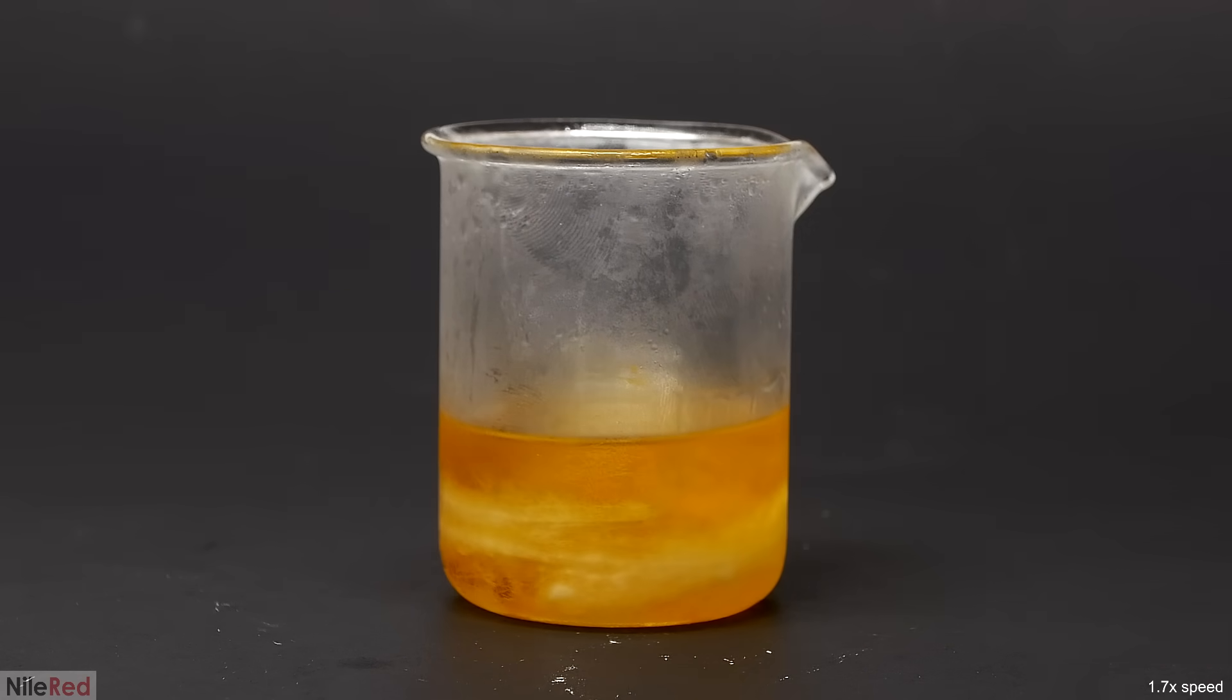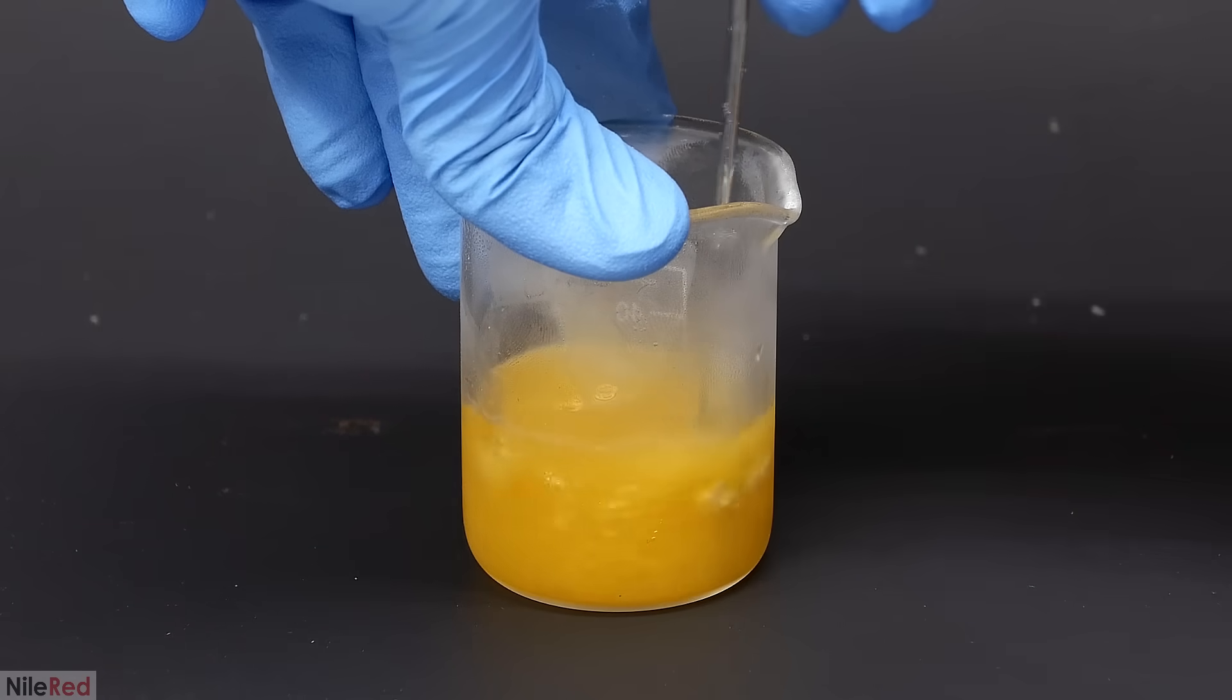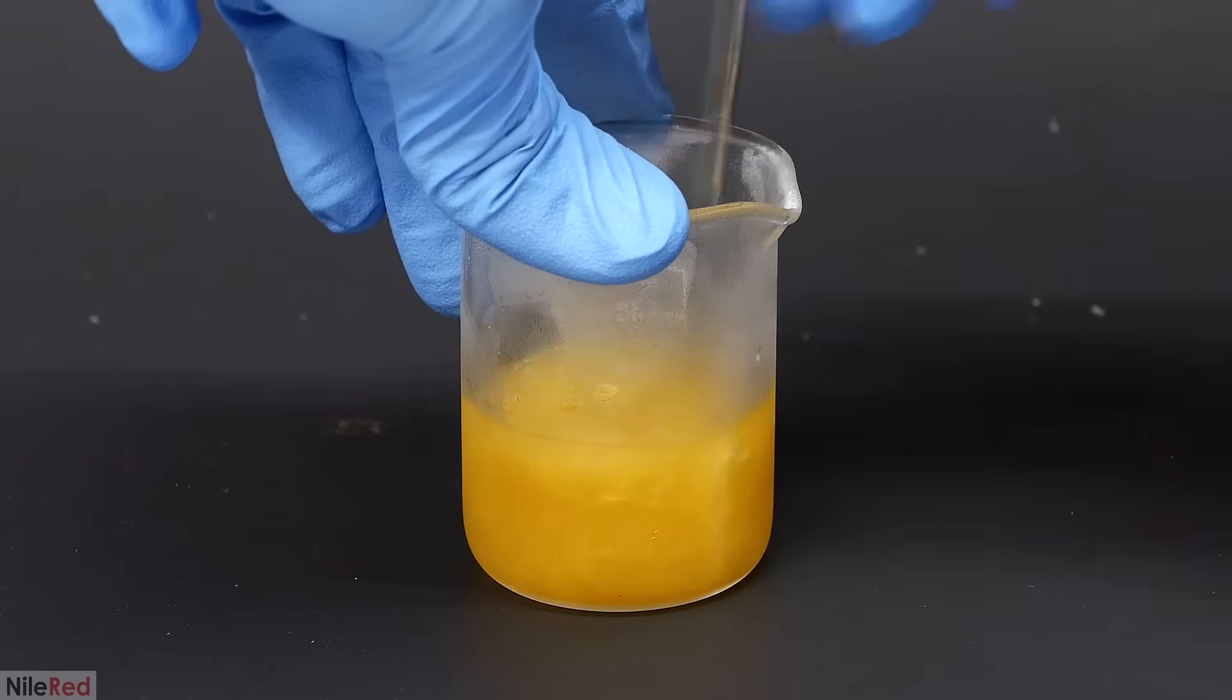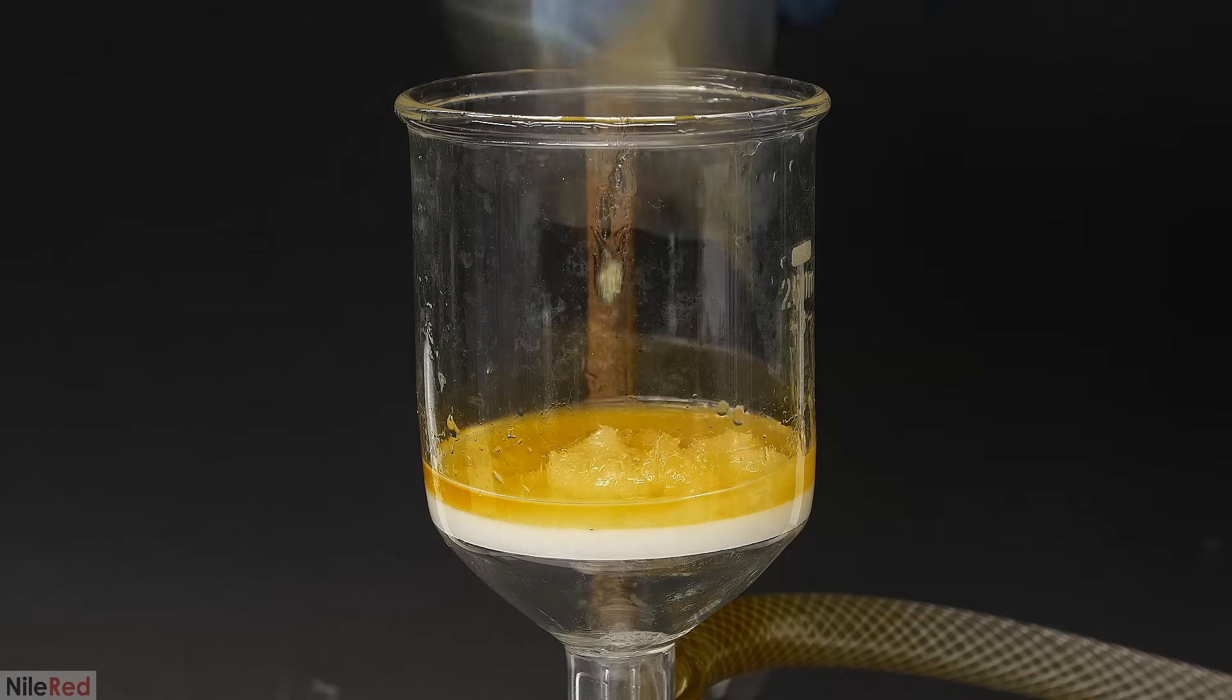This does happen sometimes though, and crystallization just needs to be induced by scraping the wall a little. To finalize the crystallization, I put it back in the freezer for a couple hours. Then, as usual, I broke it up into pieces and filtered it off.